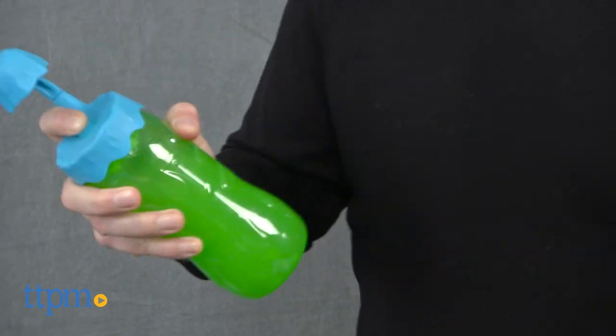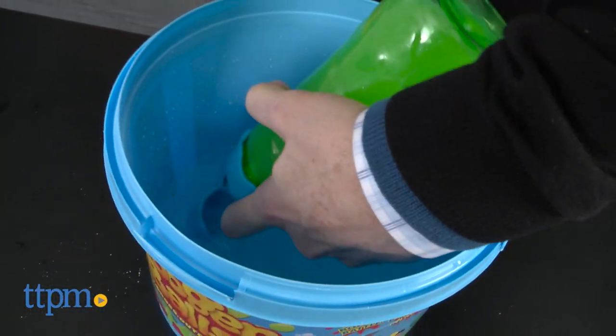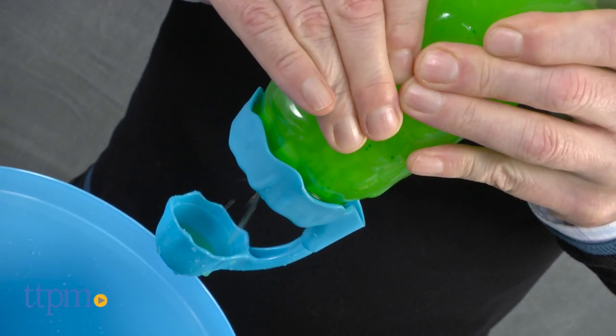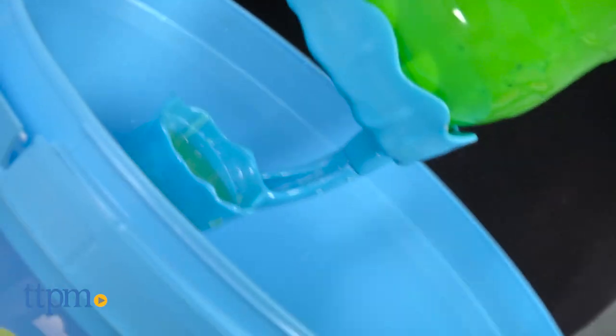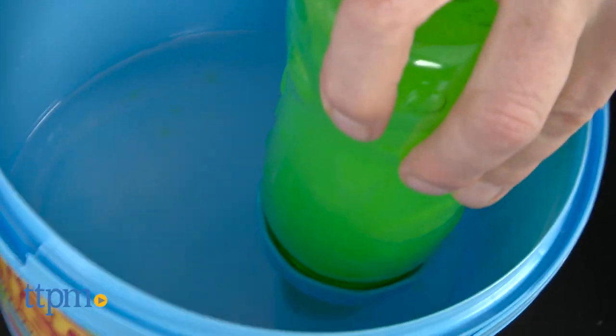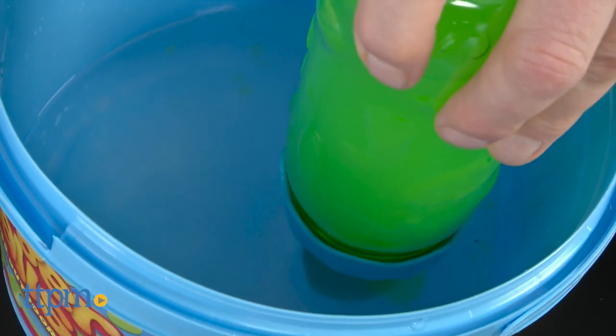Now, here comes the fun part. Dip the booger cap in the bath, then squeeze the bottle to get just enough booger mix in the cap right up to the fill line. Then, gently swirl the cap with the booger mix in it in the bath until the booger ball starts to form. Once it has, you can dump it into the bath and keep making more.